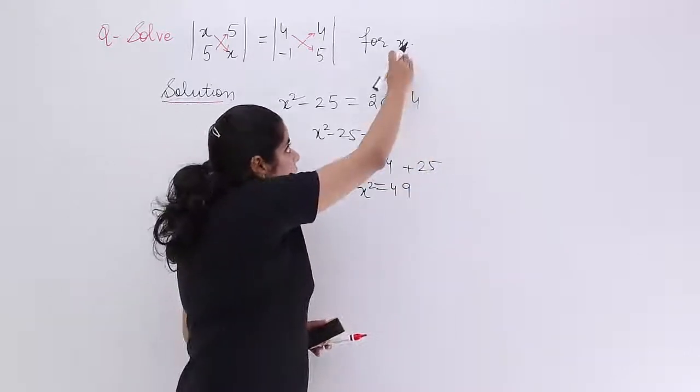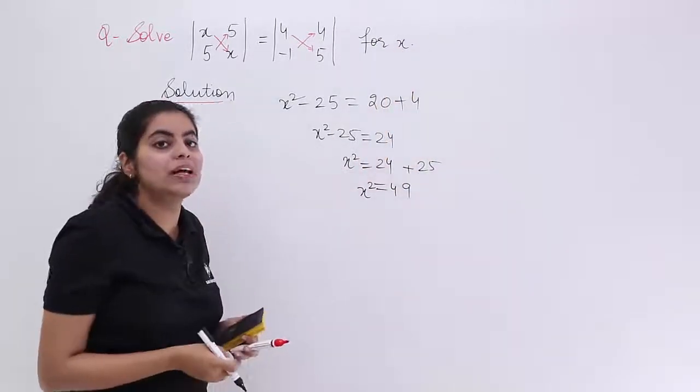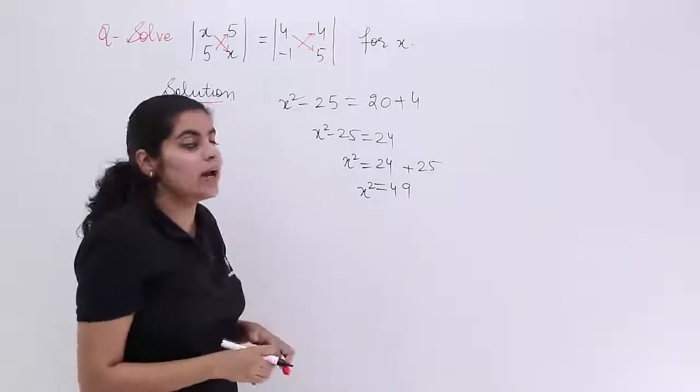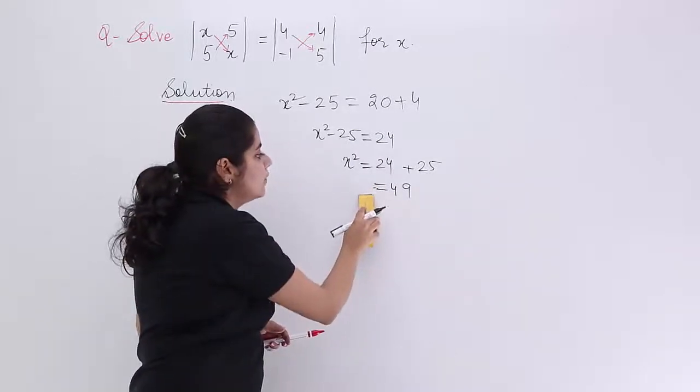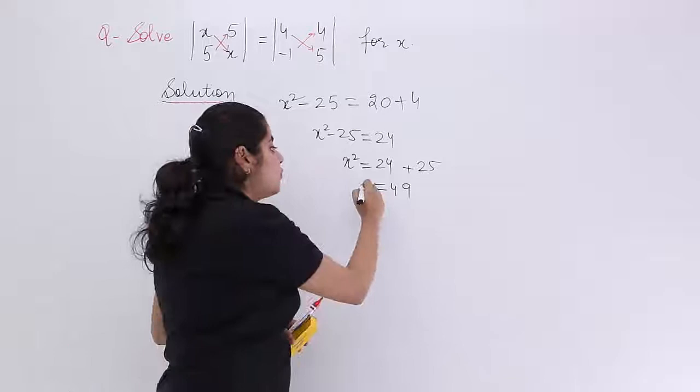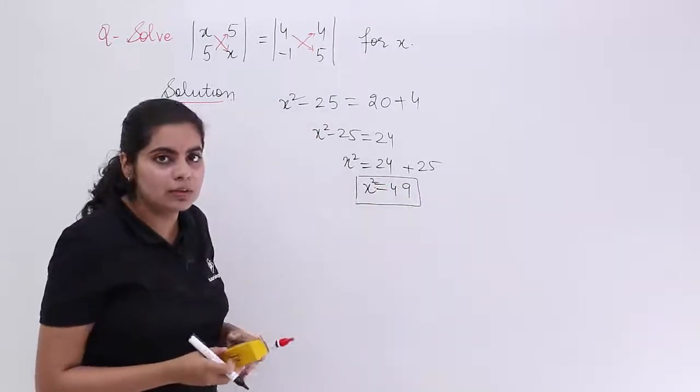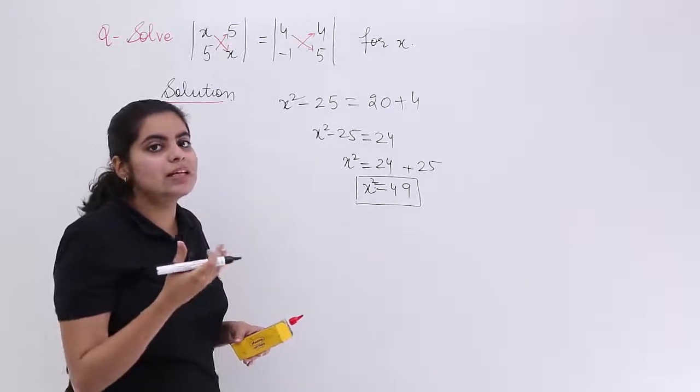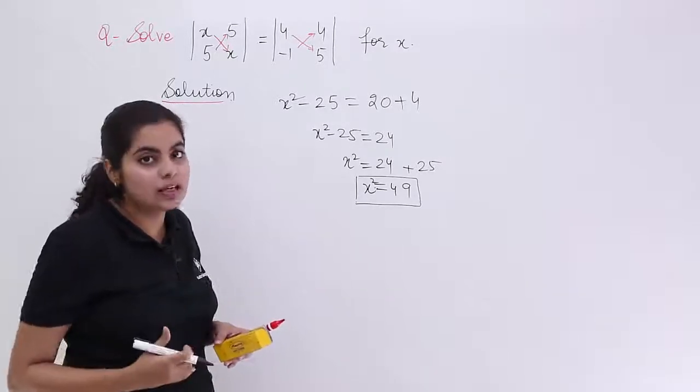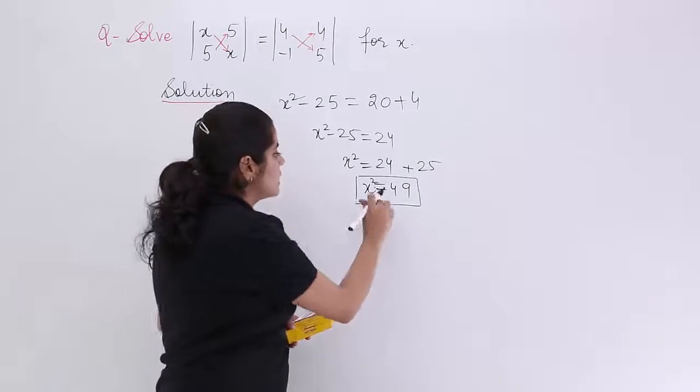But did we find x? No, we need to find x. This is x². It is not x. So basically we need to compute the value of x from x². Now if x² is available, how to find x? You basically have to find the square root. So what is x equal to?